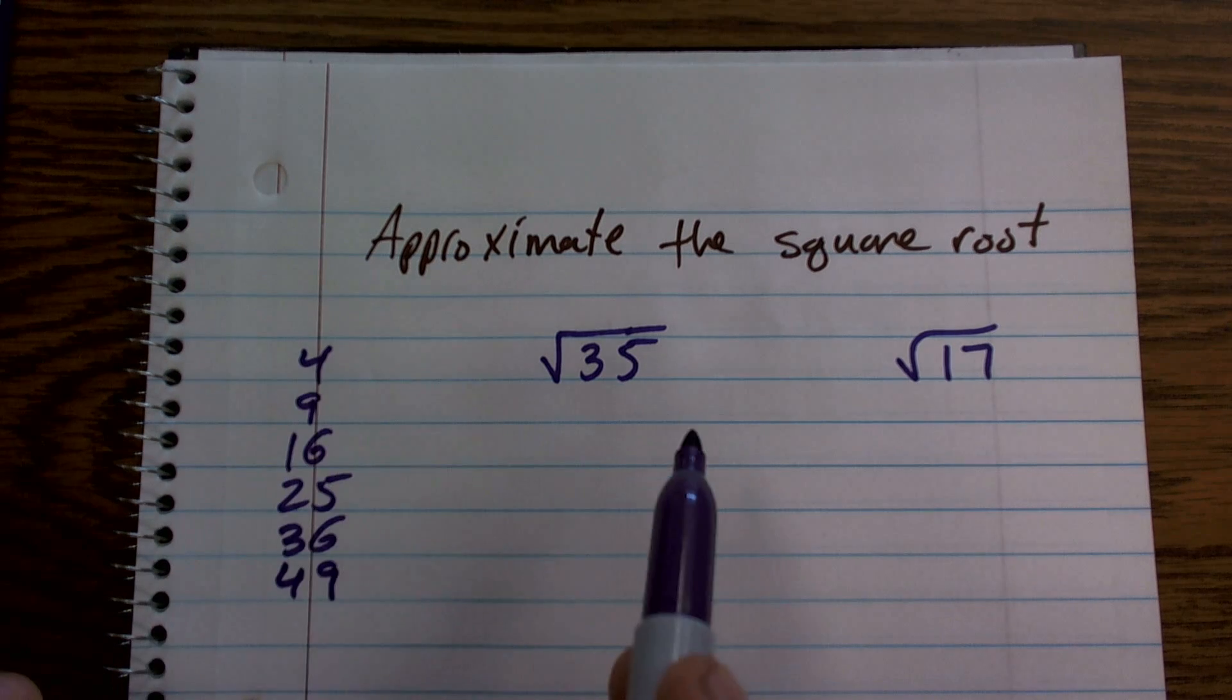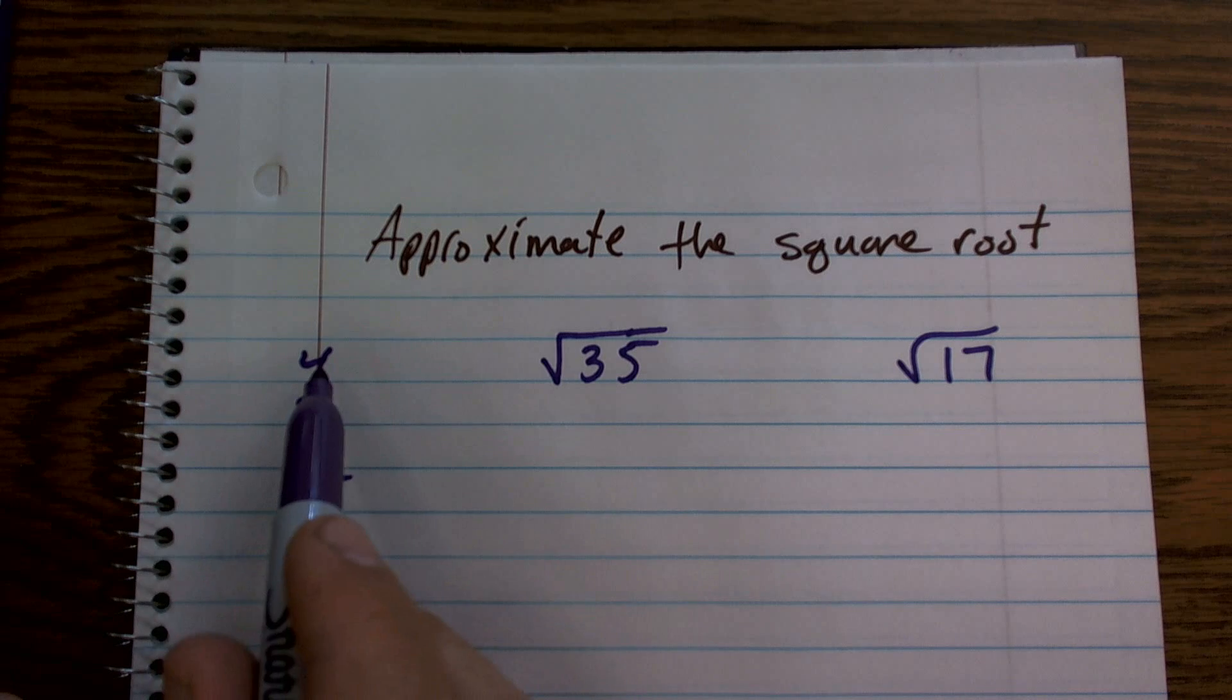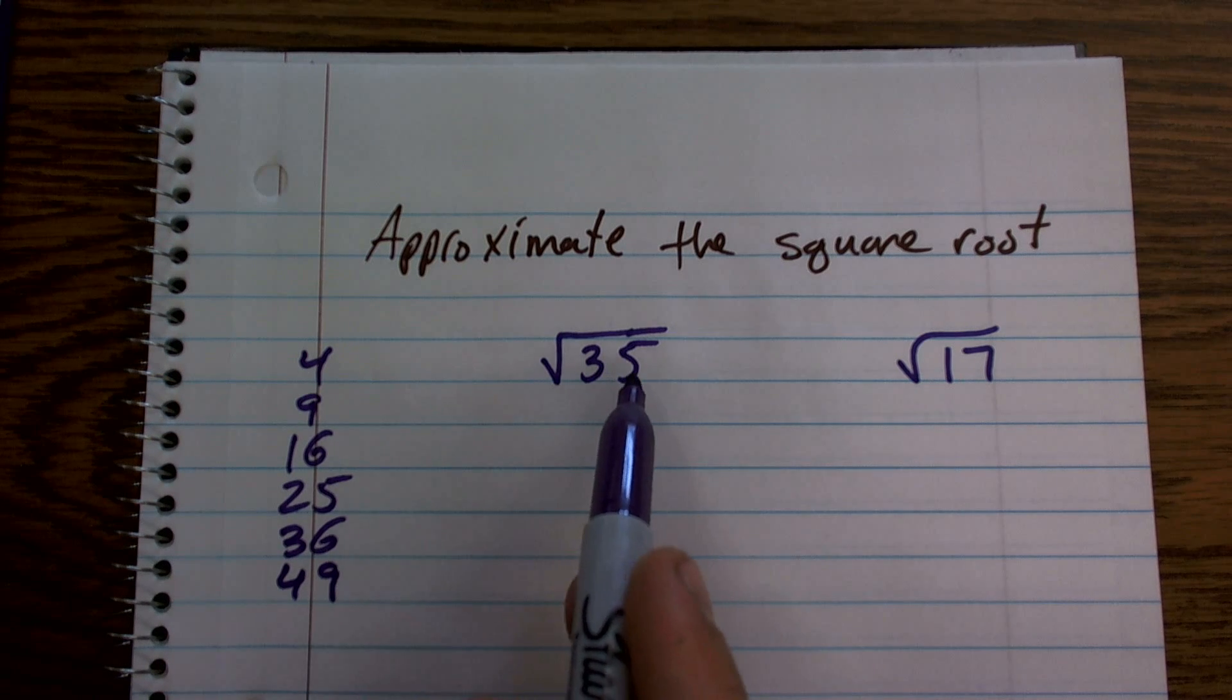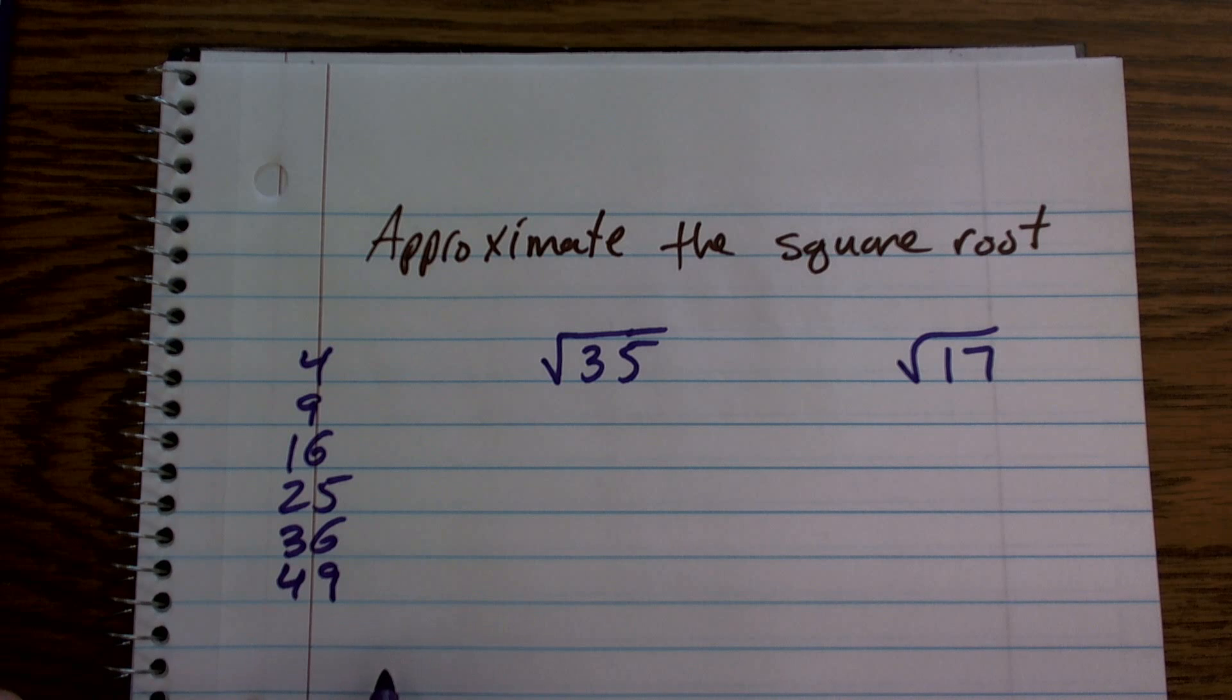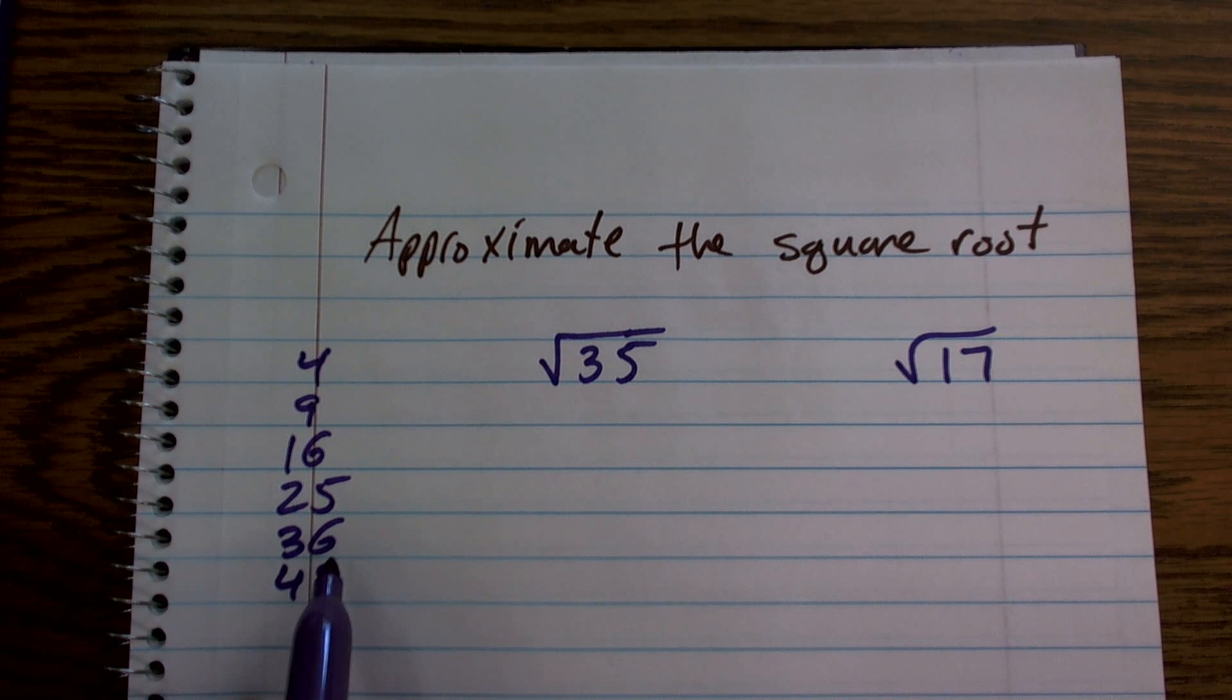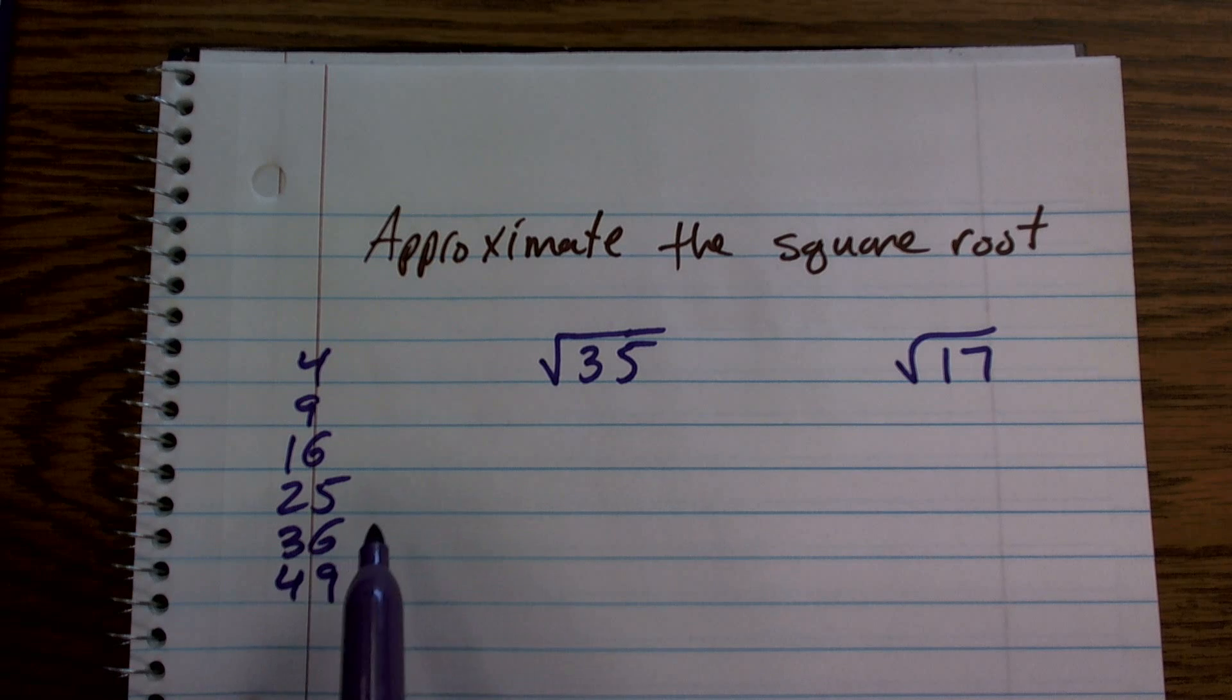If you look at this, let's take a look at the square root of 35. The square root of 35 is not one of my square numbers. However, it's very close to 36. I know the square root of 36 is 6.